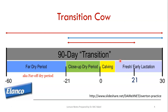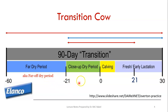We generally talk about a 60-day dry period, which can be further divided into a far-off dry period and a close-up dry period. The close-up dry period is the last three weeks of gestation, and everything before that becomes the far-off dry period. In a 60-day dry period, that's almost 40 days of far-off; with a 45-day dry period, it's 25 days of far-off.